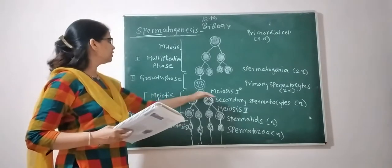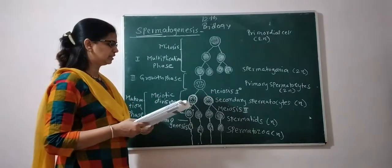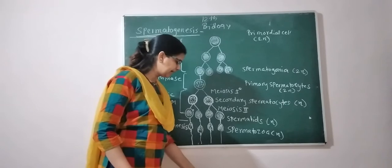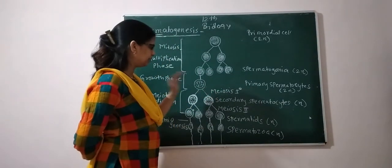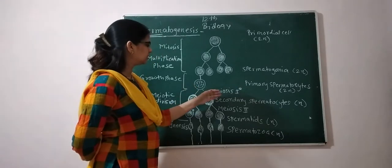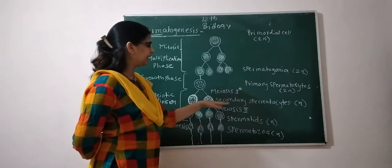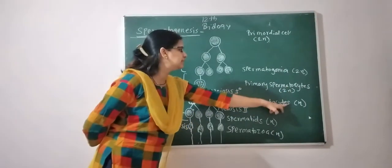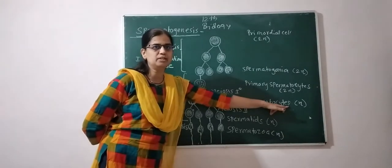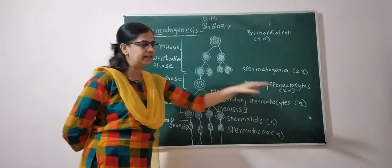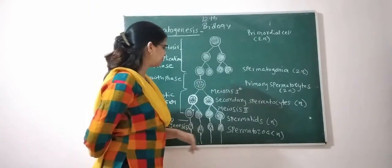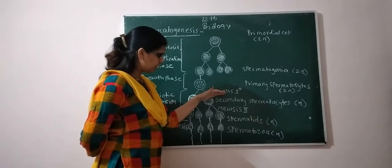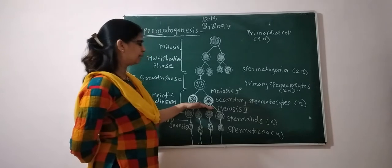In the maturation phase, there is a meiotic division — the reduction division. In meiosis I, the primary spermatocyte undergoes the reduction division to form two haploid cells called secondary spermatocytes. Each secondary spermatocyte has 23 chromosomes, reduced from the original 46.